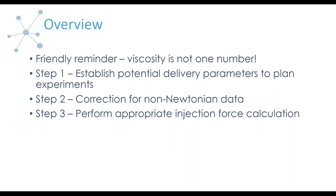After that, the first step is to establish what are the potential delivery parameters for your syringe system, and then use those to plan our experiments so that we get the data most valuable for the prediction. Next, proteins — probably our biggest audience here — at therapeutic levels are quite often non-Newtonian. So we want to handle how to correct the non-Newtonian data to get the proper data for our analysis. And finally, we want to perform the appropriate injection force calculation — whether for a Newtonian or non-Newtonian sample, and how do we know.